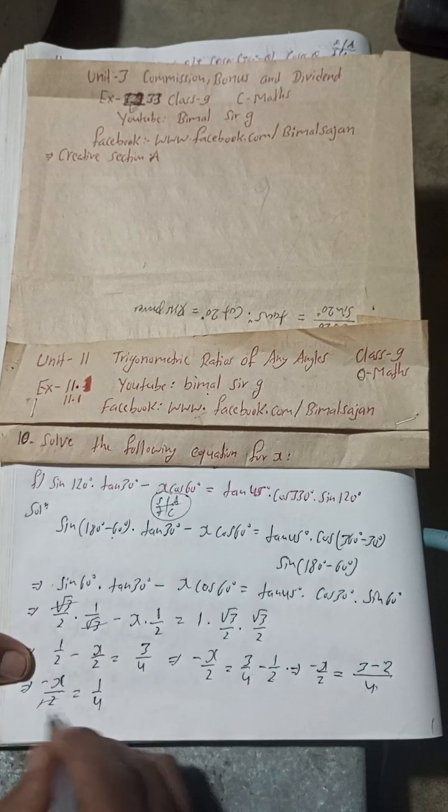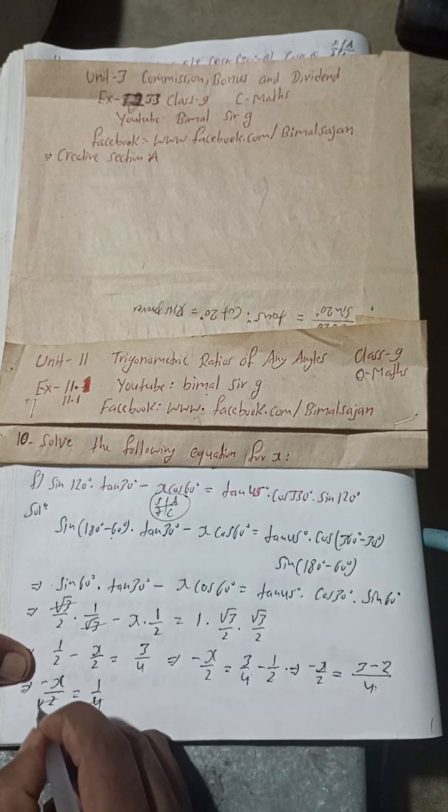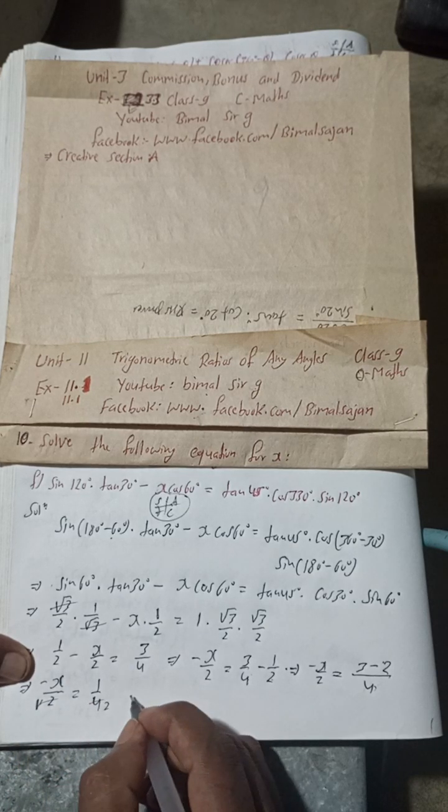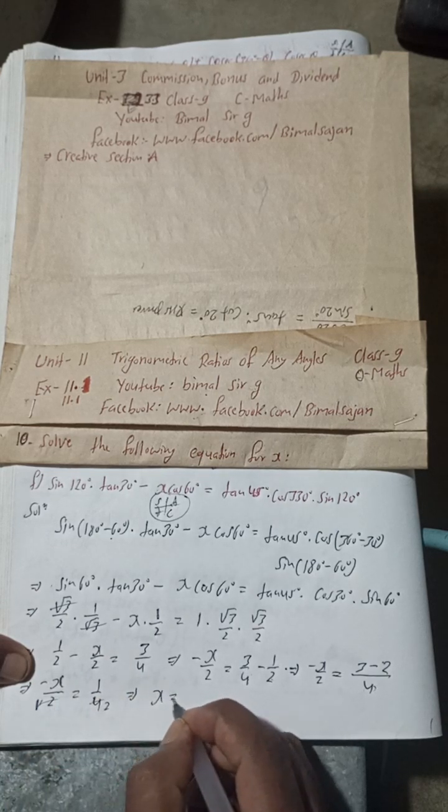Now this is 1 by 2 and half of this 1 by 2, half of 4 is 2, so this is equal to minus x by 2. This implies x is equal to minus 1 by 2.